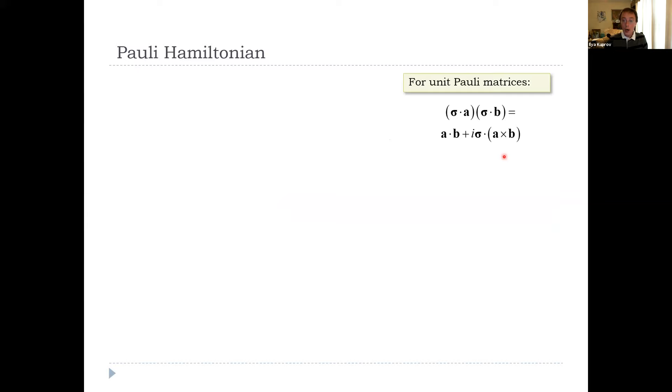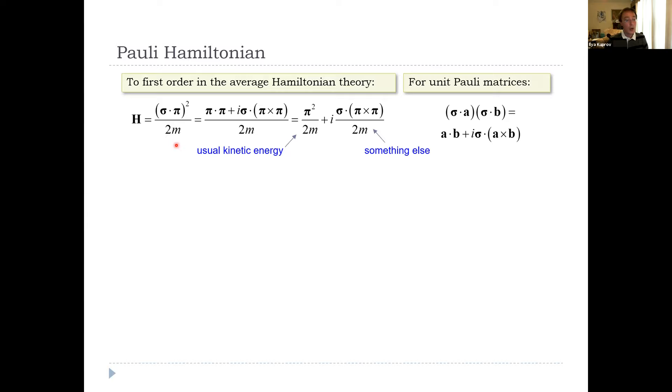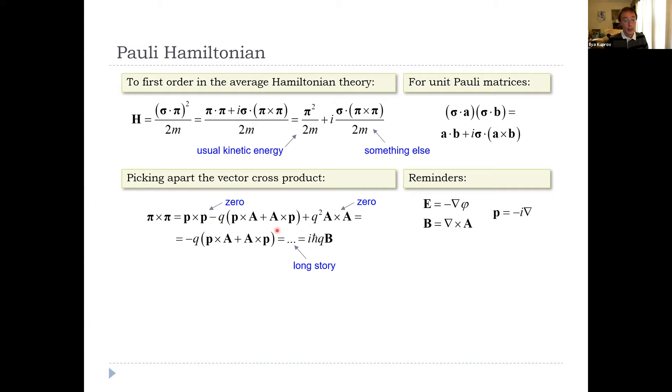Okay, so I will remind you that for unit Pauli matrices, we have this relation. So we now have our average Hamiltonian sigma dot pi over 2m, opening this up using this relation, pi dot pi plus sigma dot pi cross pi. This is not a zero because these are not vectors—these are operators. Split it up. That's our usual Schrödinger kinetic energy. And then we have something else in here. Well, let's just open up the cross. I will remind you what various things are with respect to the vector potential, scalar potential, and what momentum is. So pi cross pi is p cross p, then p cross a, a cross p, and then a cross a. Now that's actually zero because these things commute with each other. That is zero because that's just a vector. And a really boring exercise in vector calculus would convince you that that is in fact this—that is to say the magnetic field. That's quite a long story.